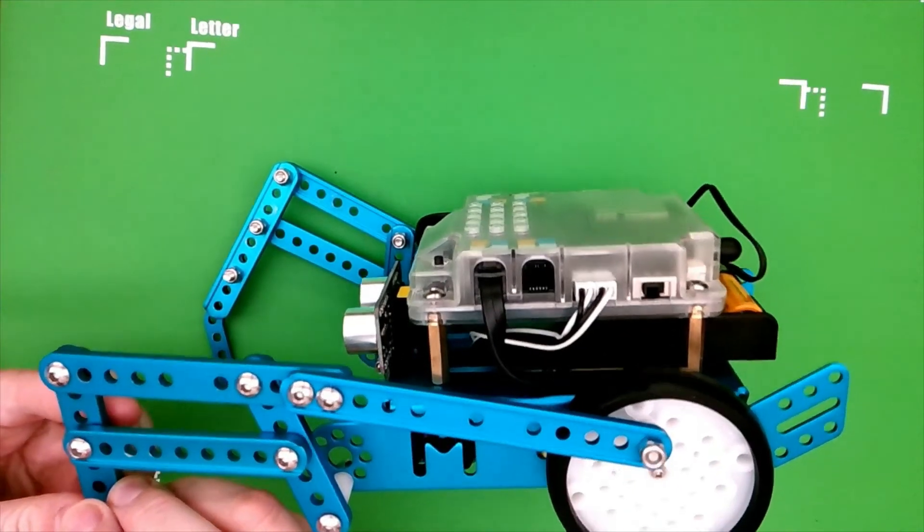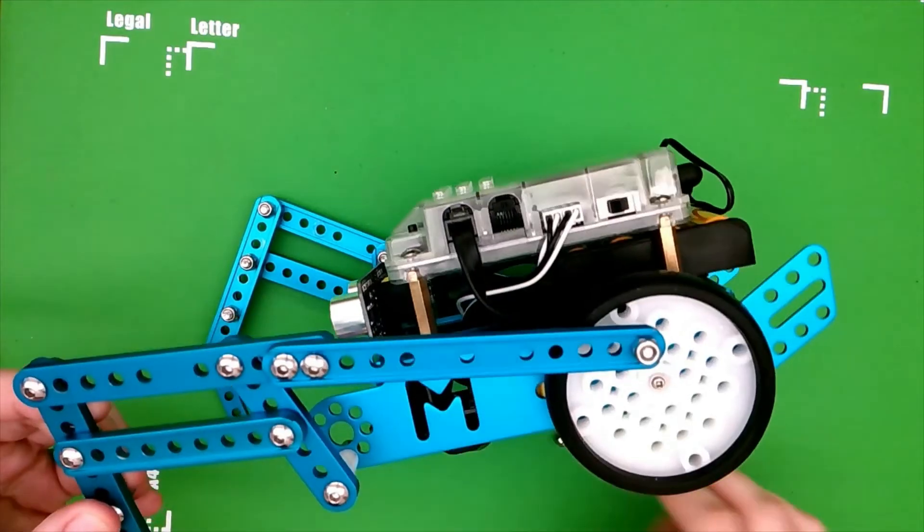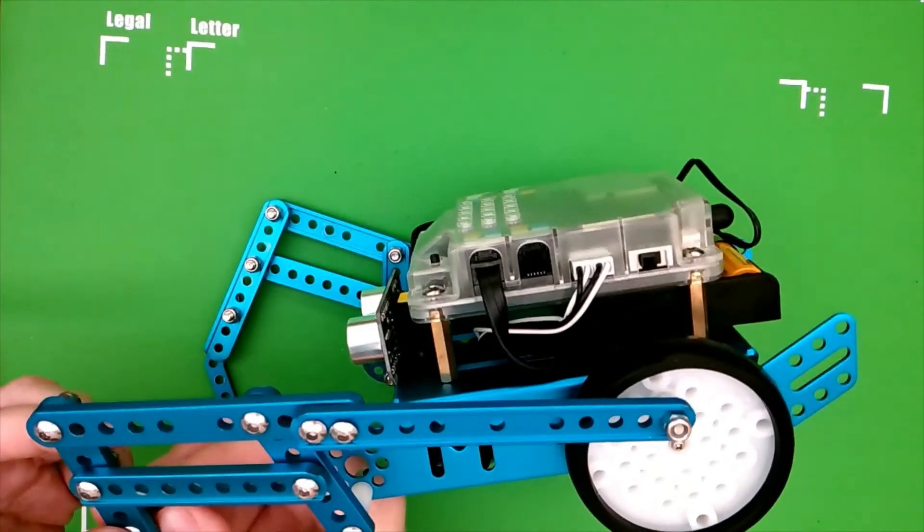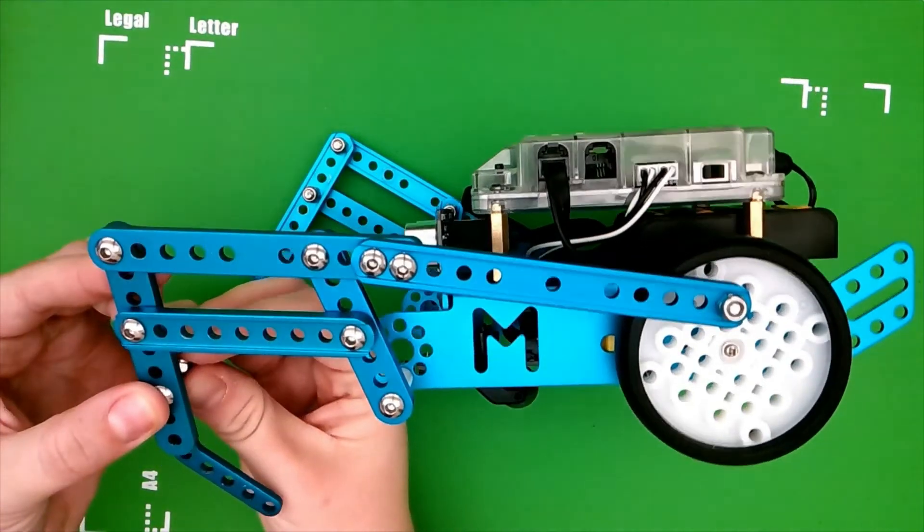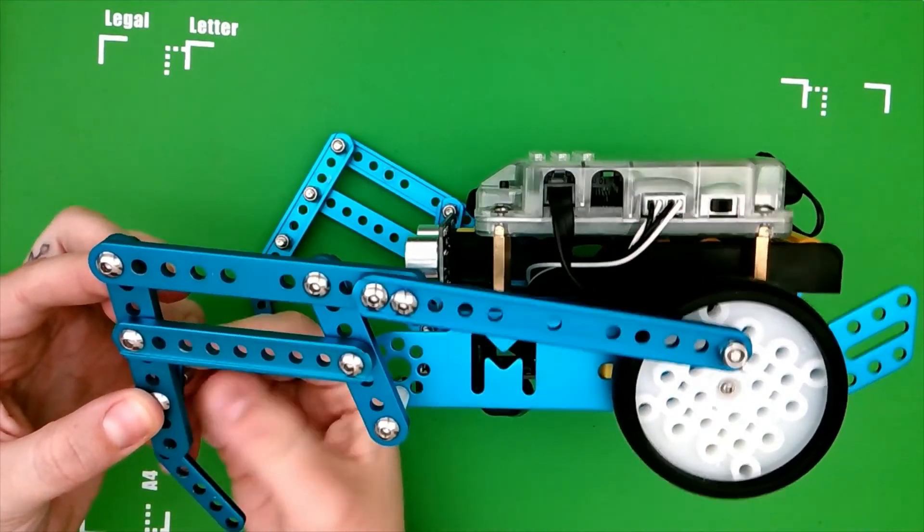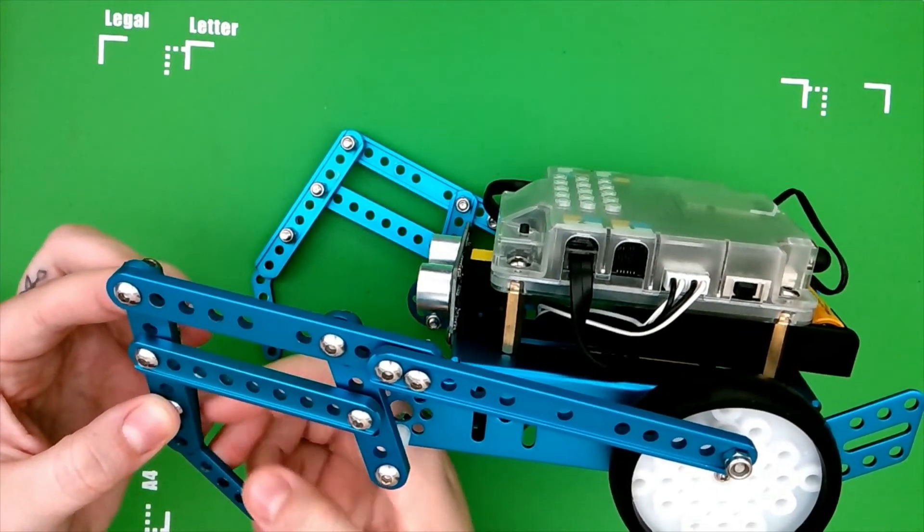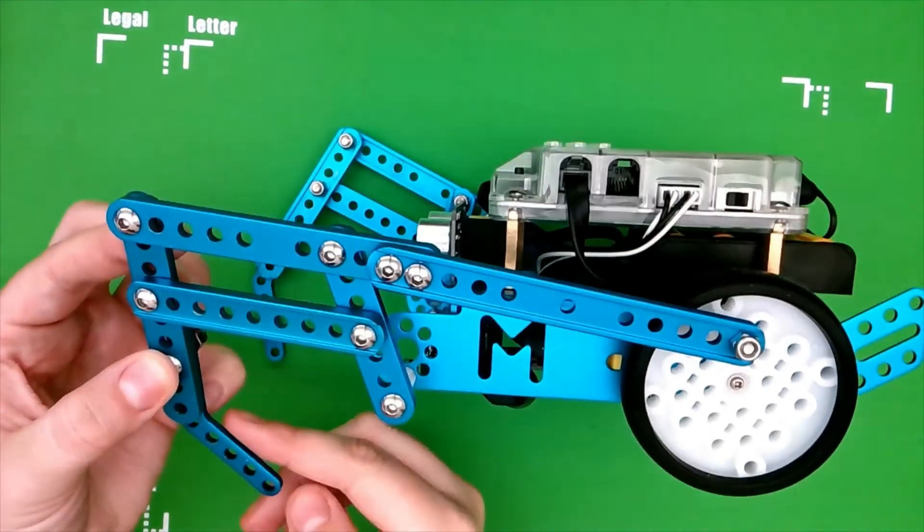We're going to push it through just like that. And then we're going to screw this on with our wrench and screwdriver. Make this one pretty tight so it will look like mantis legs and won't move.